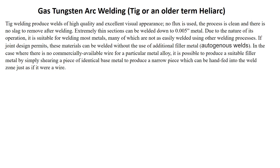TIG welding produces welds of high quality and excellent visual appearance. No flux is used; the process is clean, and there is no slag removal after welding. Extremely thin sections can be welded down to five thousandths of an inch. Due to the nature of its operation, it is suitable for welding most metals, many of which are not easily welded using other welding processes. If joint design permits, these materials can be welded without the use of additional filler metal, known as autogenous welds. In cases where there is no commercially available wire for a particular metal alloy, it is possible to produce a suitable weld metal by simply shearing a piece of identical base metal to produce a narrow piece which can be hand-fed as if it were a piece of welding wire.